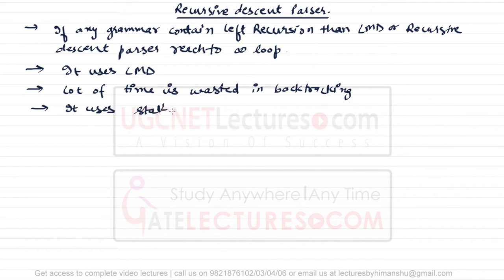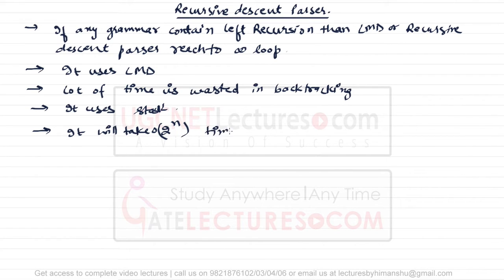The fifth point: it will take O(2^n) time complexity in the worst case. Don't worry — I'll explain with a simple example. I'll take a simple algorithm first and then an improved version of that algorithm. Write down these points and let me explain the algorithm.